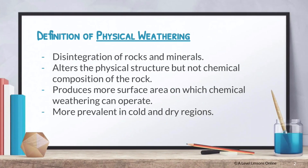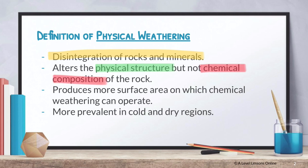First, what's the definition of physical weathering? The definition of physical weathering is very simply the disintegration of rocks and minerals. So you're looking at the physical structure of a rock and not its chemical composition — chemical composition is where chemical weathering takes place, which I'll go through in the next video. Physical weathering clears up more surface area whereby chemical weathering can then exploit and operate on, and it tends to be more prevalent in cold and dry regions.